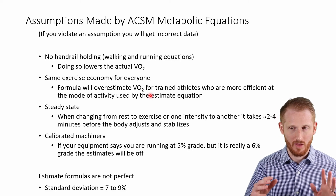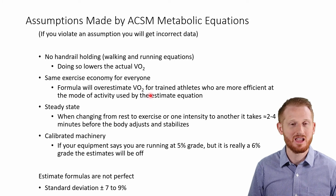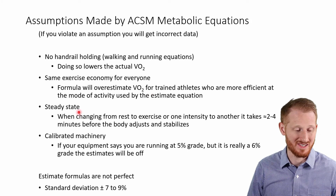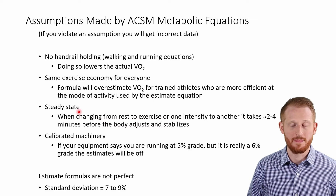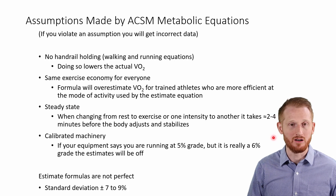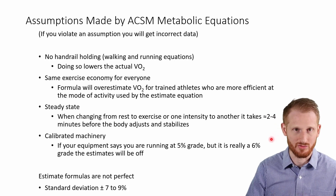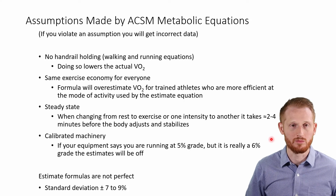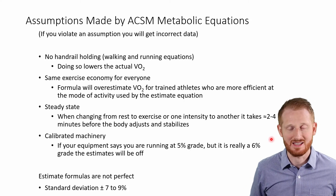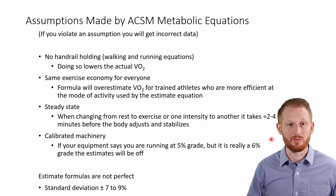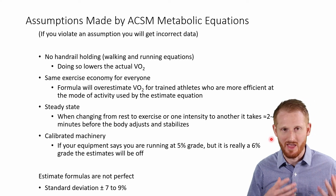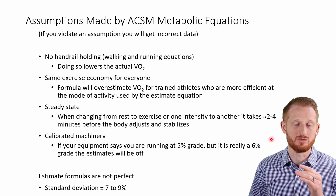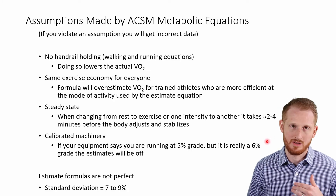Likewise, if somebody has poor exercise economy, the equations will underestimate the work they're doing. All these equations also assume that the person is in a steady state, which typically takes two to four minutes of exercising at the same intensity. So these equations won't be accurate for the first minute or so — heart rate, breathing rate, metabolic rate, and oxygen consumption are all still adjusting, and there may still be an oxygen deficit.